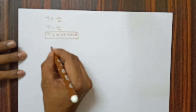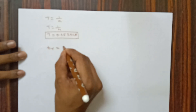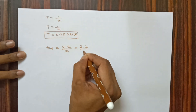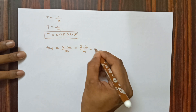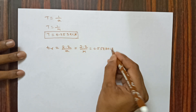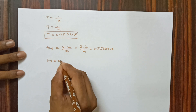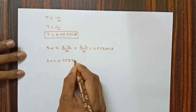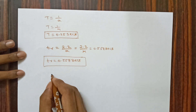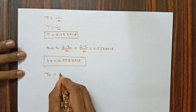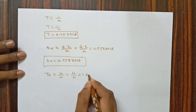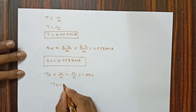Rise time TR equals 2.2 by a, where a is 4, so TR equals 2.2 by 4, giving TR approximately 0.55 seconds. Settling time TS equals 4 by a, and with a equals 4, TS equals 4 by 4, which equals 1 second.